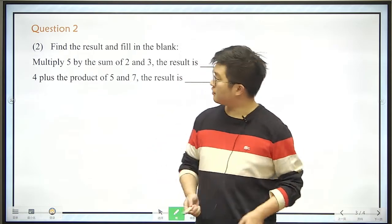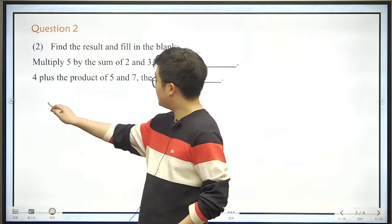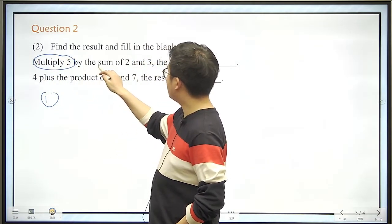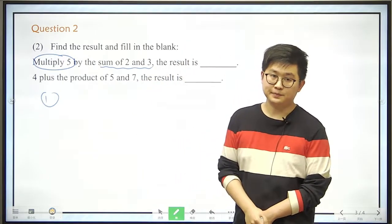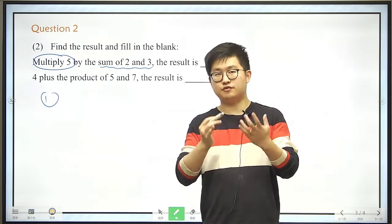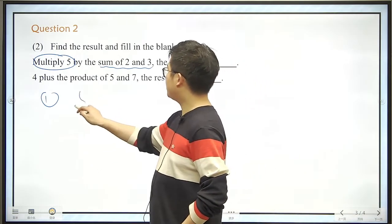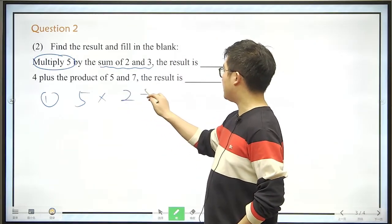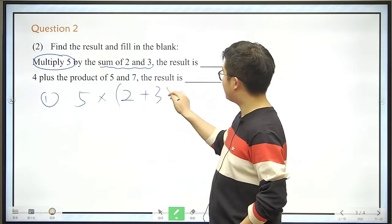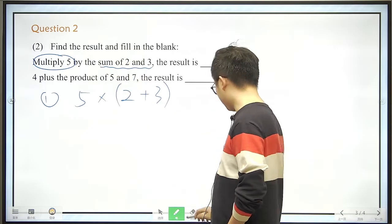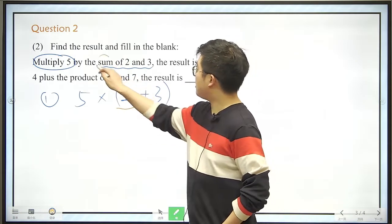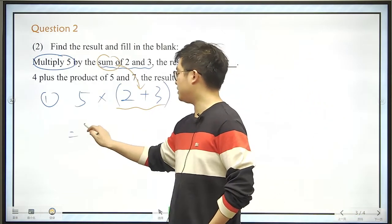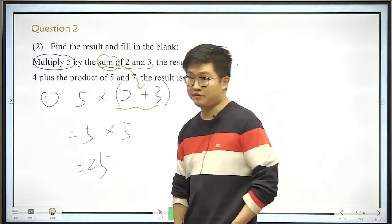We still need to find the result. The first one is multiply 5 by the sum of 2 and 3. That means 2 plus 3, but we need brackets here because it says the sum of 2 and 3, and this is the sum. So we just continue, this would be very easy. It's 5 times 5.